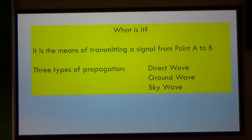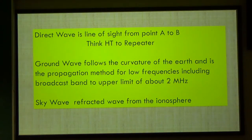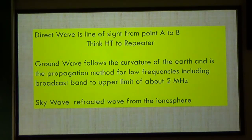Propagation is a means of transmitting a signal from point A to point B, and there are three types: direct wave, ground wave, and sky wave. We're mainly going to be talking about sky wave tonight. Direct wave is line of sight — like your HT to a repeater. Ground wave follows the curvature of the Earth and is mainly for low frequencies, seldom getting above about 2 megahertz, so 160 meters is about all you can work on ground wave.